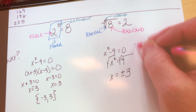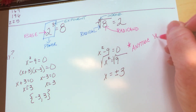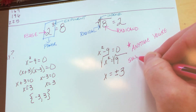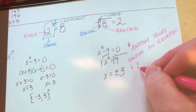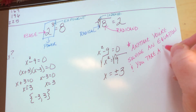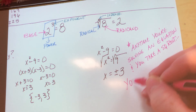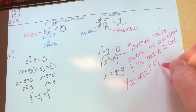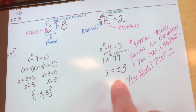Write this in your notebook in a bright color: any time you're solving an equation and you take a square root, you must put a plus or minus. If you don't, you're throwing away one answer — you'll only get half the problem right. If you said the square root of 9 is just 3, on a four-point problem, I'd take off two points. What about negative 3? It's only for squares.